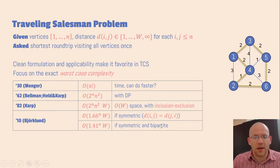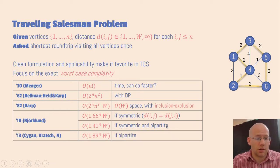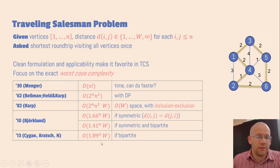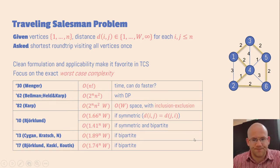The second result was a stepping stone to the first result. Bipartite here refers to the graph that you get with finite distances. In 2013, Sigan, Krasi, and myself relaxed this condition to also get to the asymmetric case, and we gave a 1.89 to the power n running time, which was subsequently improved by Bjorklund, Karski, and Kutis.